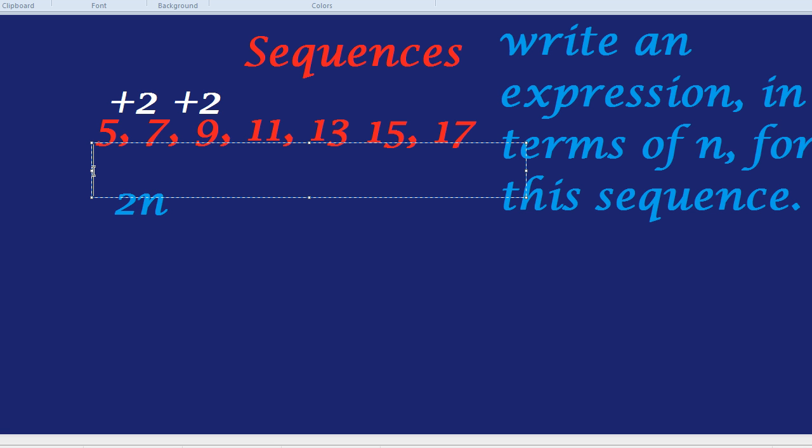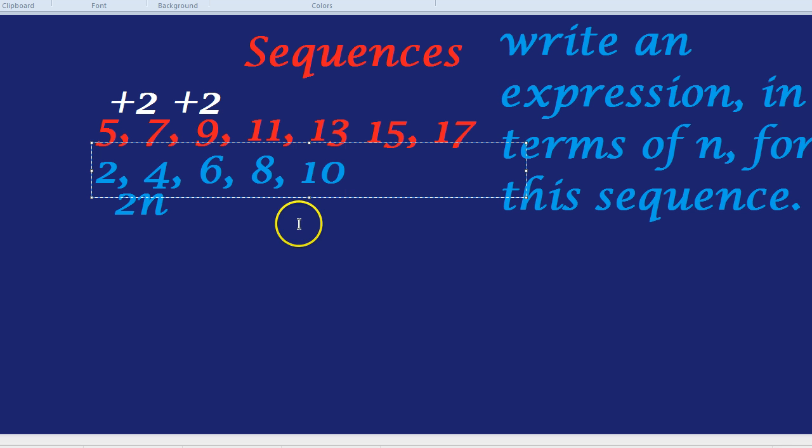Because when n is 1, we'd have 2 times 1, which is 2. When n is 2, we'd have 2 times 2, which is 4. 6, 8, 10, etc. You may be looking at that and going, well, it's similar. It's going up in twos and our sequence was going up in twos. But the numbers are completely different. The numbers are 2 and 4 and 6 when we had 5 and 7 and 9.